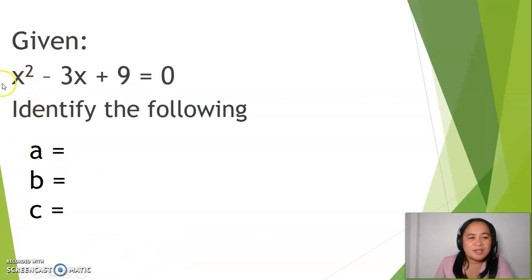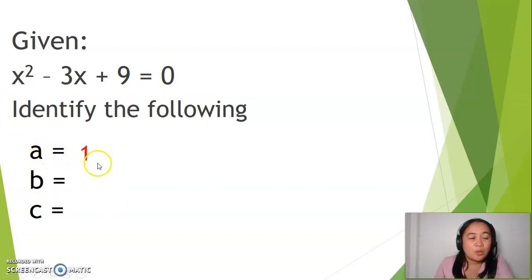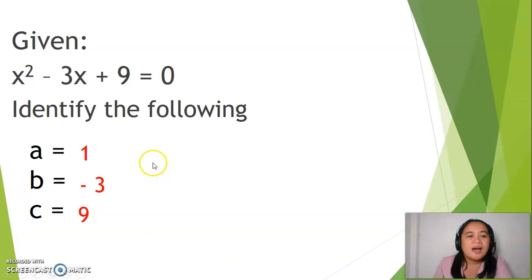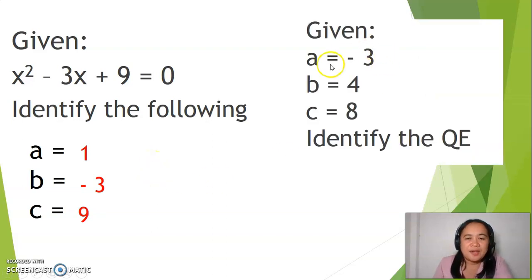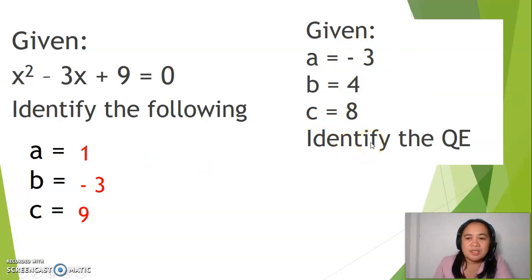Given this complete equation, x squared minus 3x plus 9 equals 0, the value for a is 1, the value for b is negative 3, and the value for c is 9. Another example: if a is negative 3, b is 4, and c is 8, identify the quadratic equation.